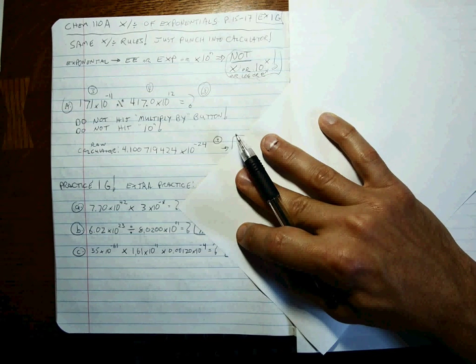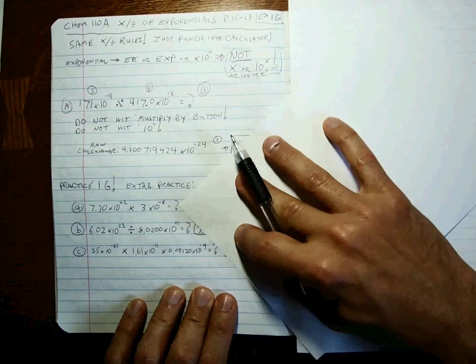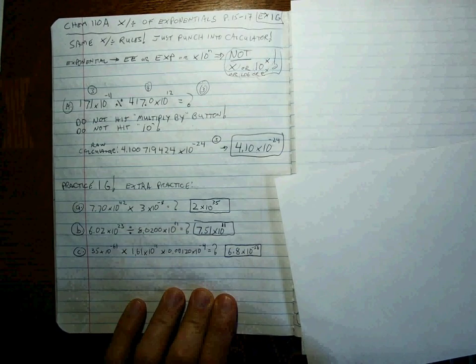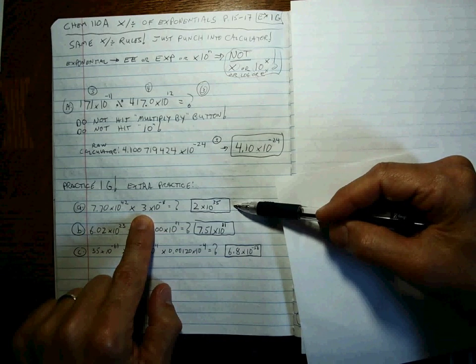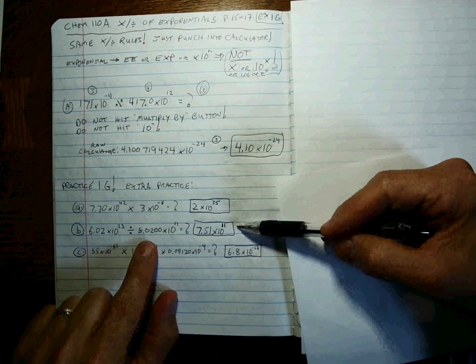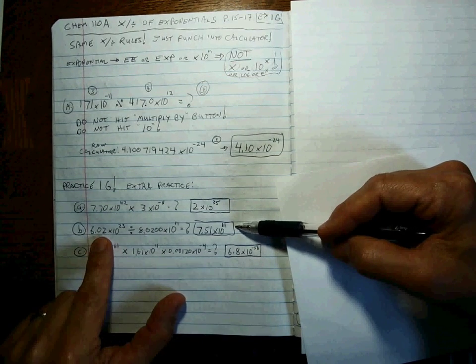Alright, you're back. Let's see if you ended up with these answers. These are the correct answers. One sig fig here because of one sig fig in this number, three sig figs in this answer because of this value.